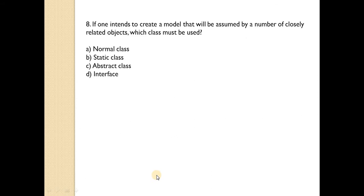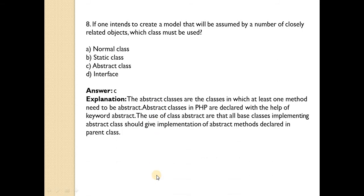Question 8: if one intends to create a model that will be assumed by a number of closely related objects, which class must be used? Answer is C — abstract classes. Abstract classes are declared with the abstract keyword, need at least one abstract method, and all base classes implementing them must provide implementation of abstract methods declared in the parent class.